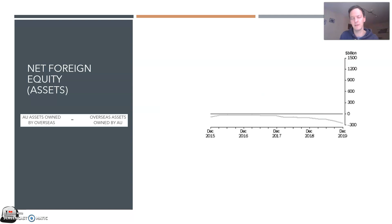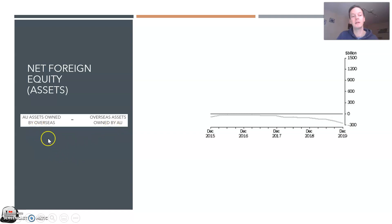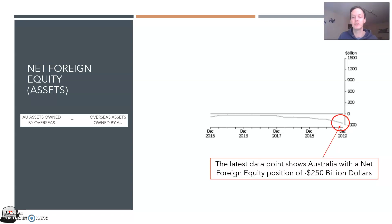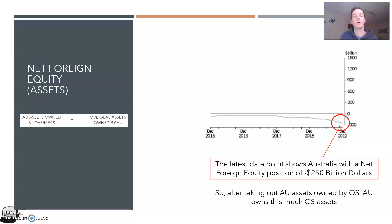Let's look at the chart for net foreign equity in Australia. You can see the zero point, and we're consistently below zero in Australia. Pause the video and make a prediction: is there more Australian assets owned by overseas, or more overseas assets owned by Australians? The latest data point shows Australia with a net foreign equity position of negative $250 billion.